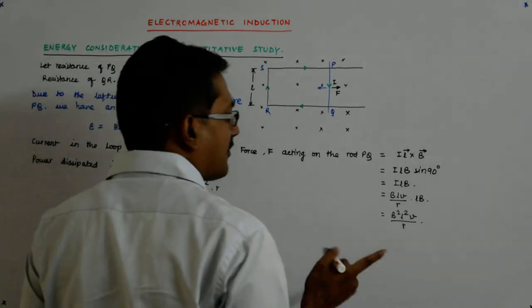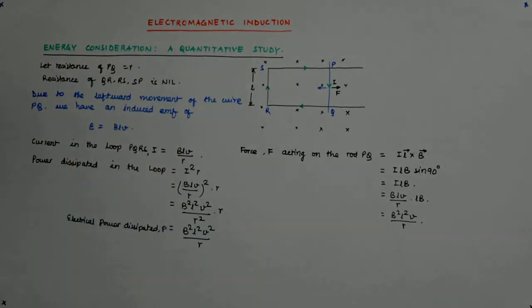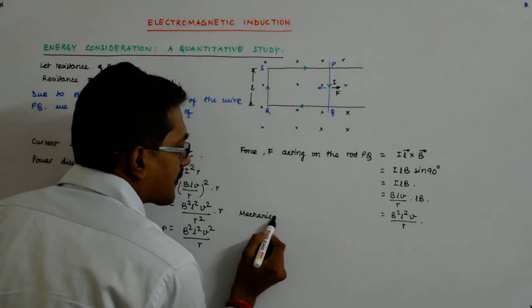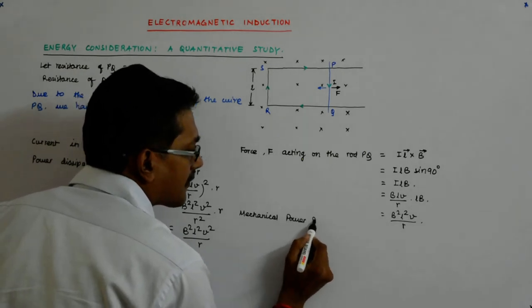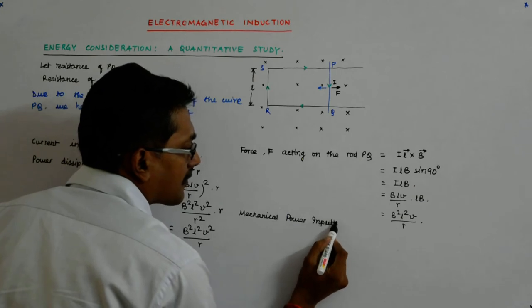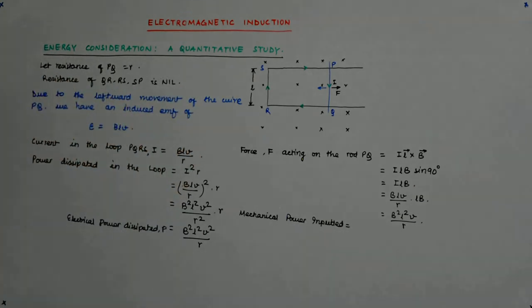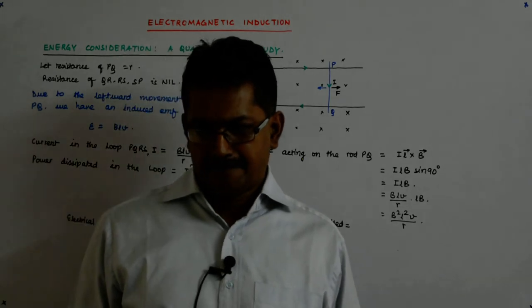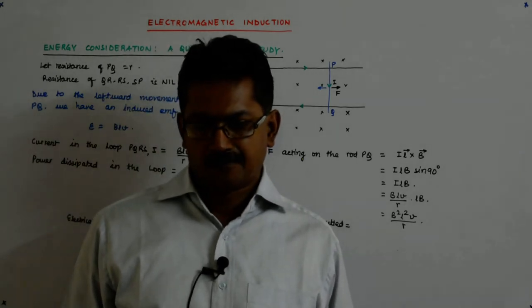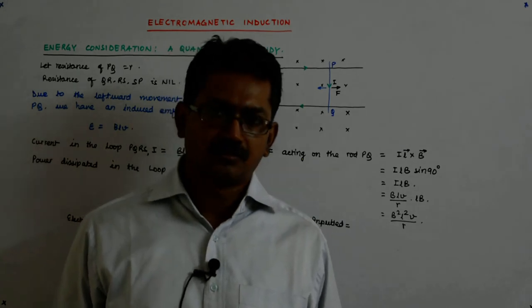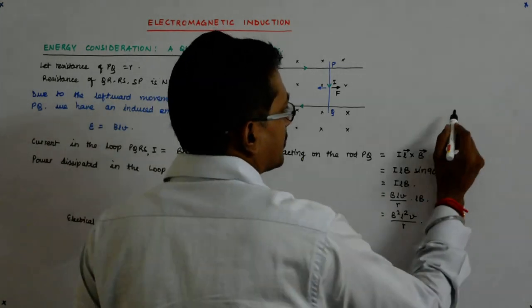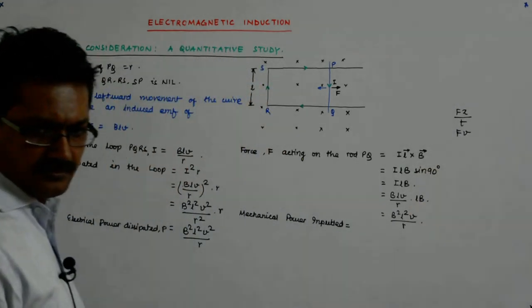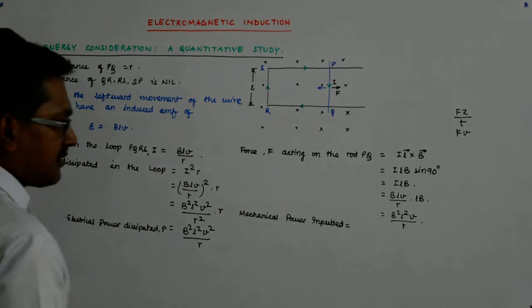Now, what is the mechanical power that I am inputting? What is mechanical power being inputted? What is the formula for mechanical power? Rate of change of work. What is work? Work is force into displacement. So, force into displacement is work and divided by T is that. So, it is actually F V. F into V is power.